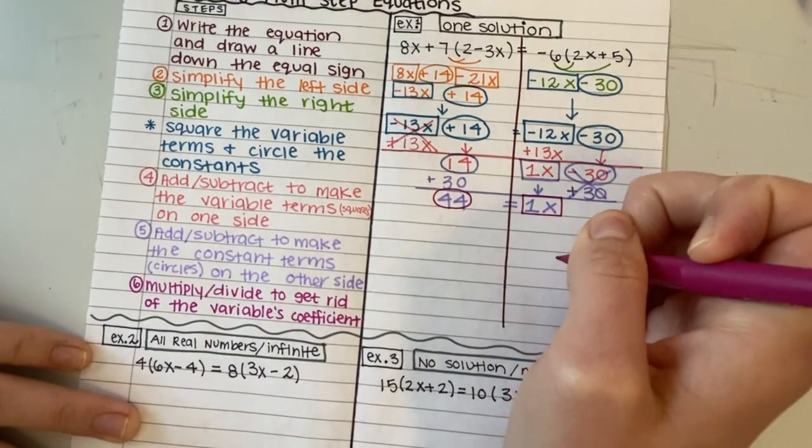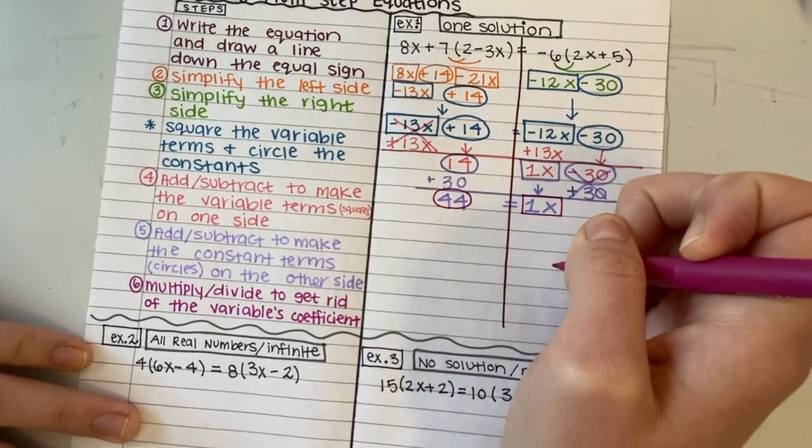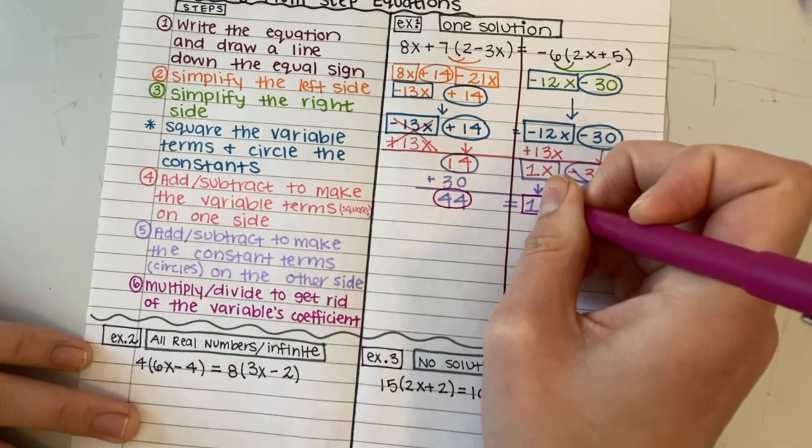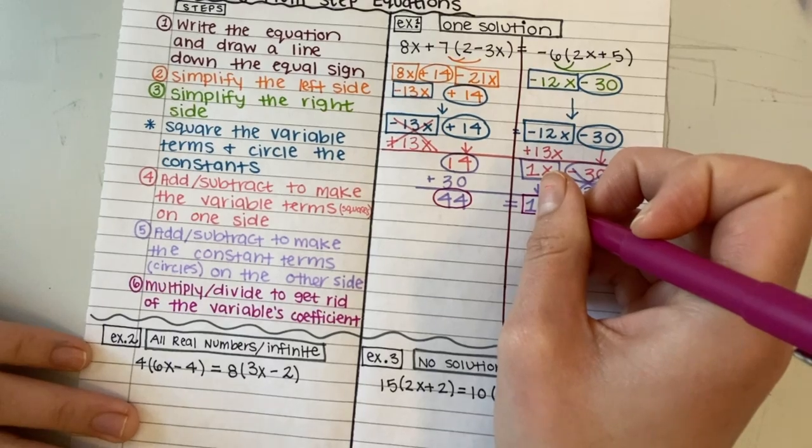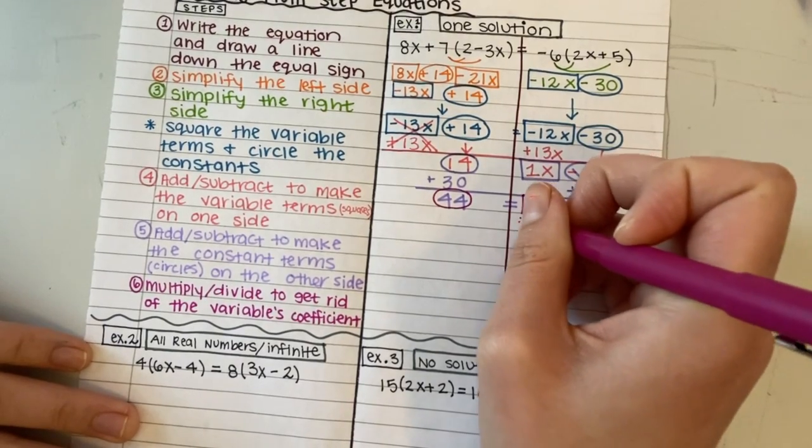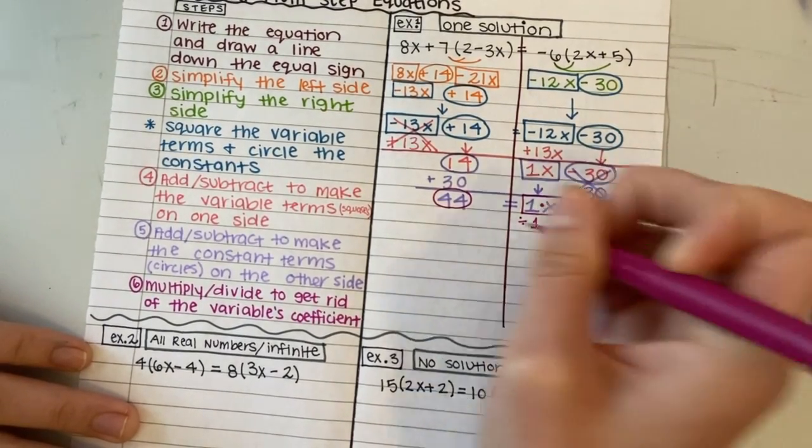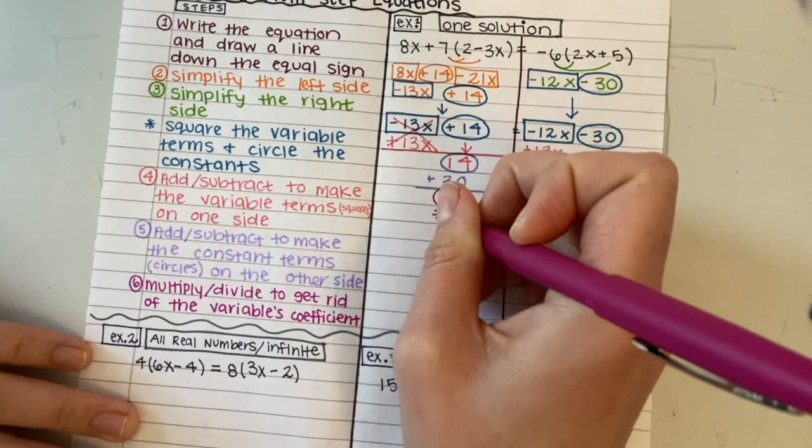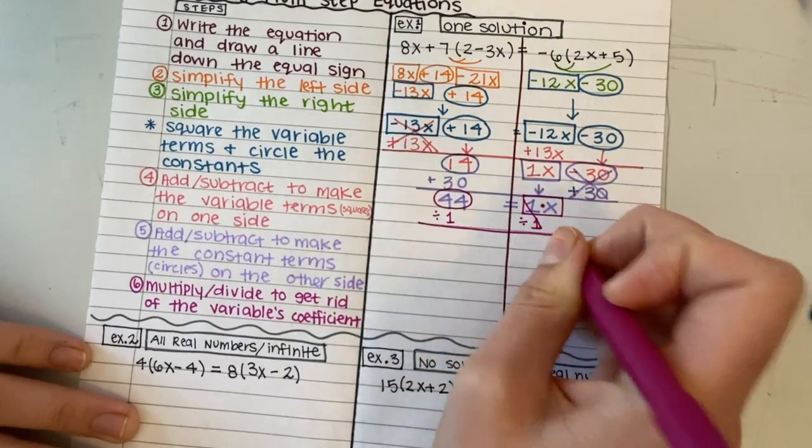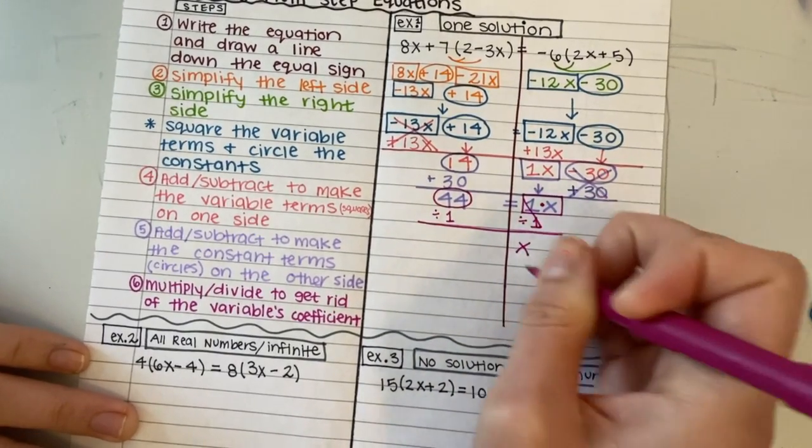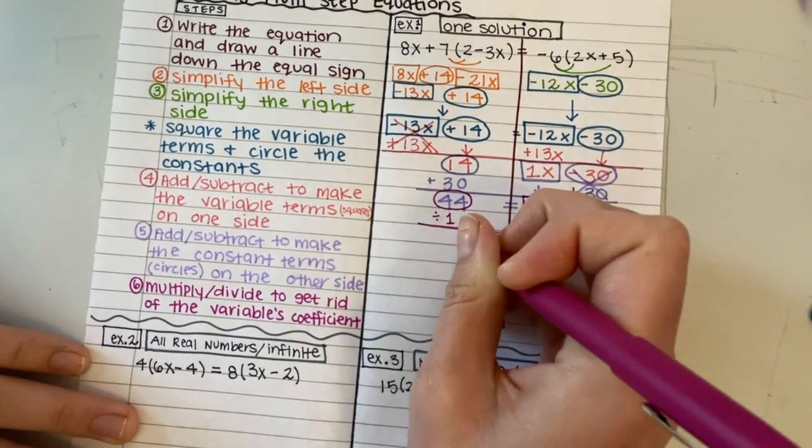So the 1 is a coefficient, so it is attached to the x with multiplication. The opposite of multiplication is division. So I need to divide by 1. Those 1s cancel out, and I am left with x equals 44.